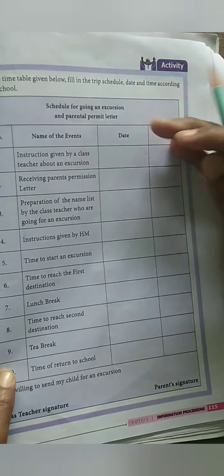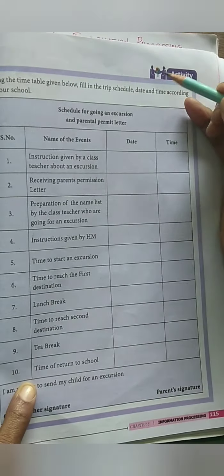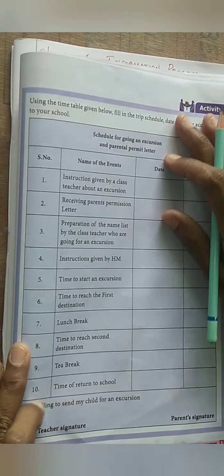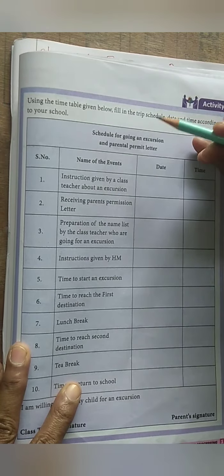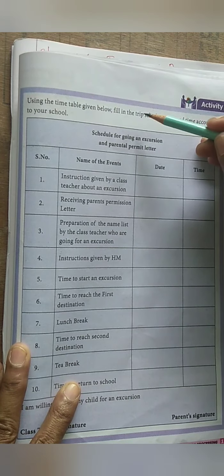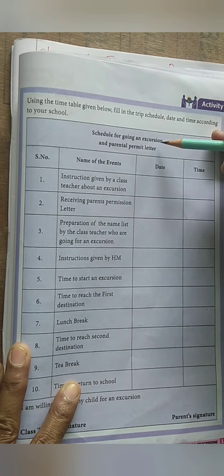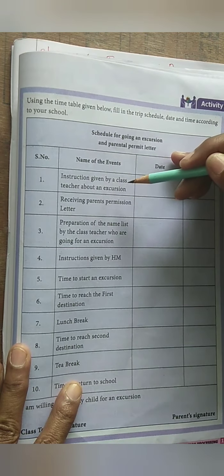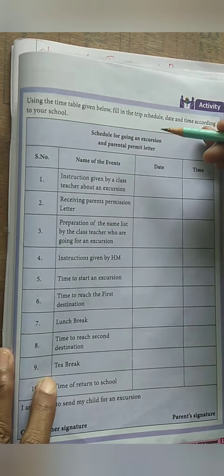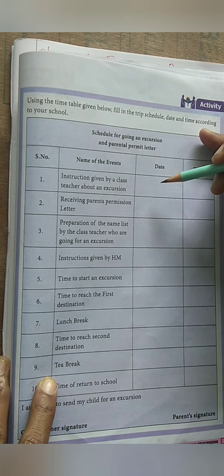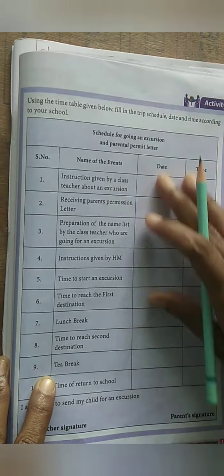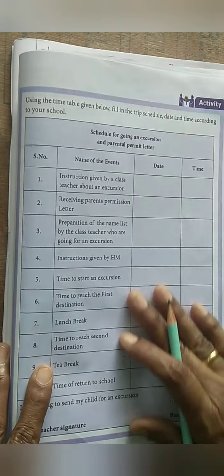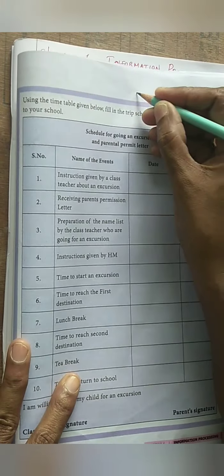You can solve this in your book itself. There is a table given - a trip schedule. This is the first activity: you are going to prepare a schedule for a trip. Trip is nothing but excursion. In school, they will be taking you for excursion. Before that, they will ask a permission letter from your parents. You have to prepare this schedule on your own. This is the first homework problem for you.